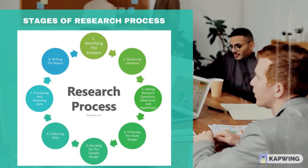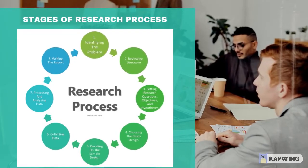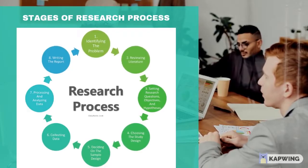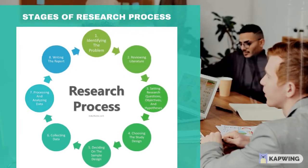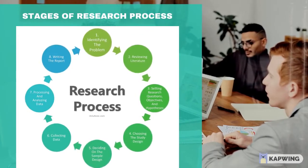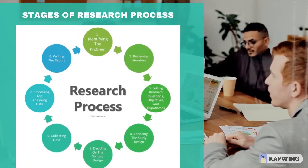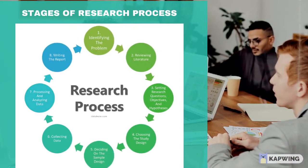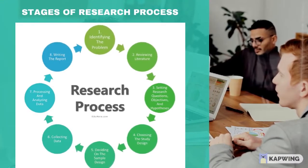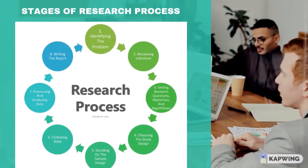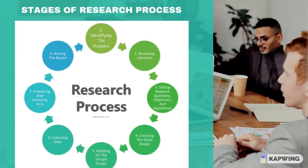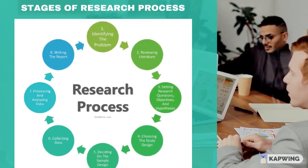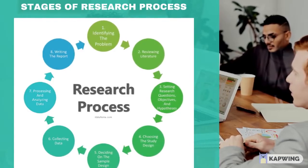These eight stages in the research process are: 1. Identifying the problem. 2. Reviewing literature. 3. Setting research questions, objectives, and hypotheses. 4. Choosing the study design. 5. Deciding on the sample design. 6. Collecting data. 7. Processing and analyzing data. 8. Writing the report.